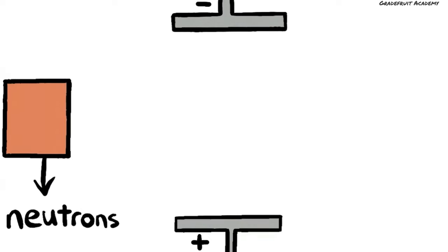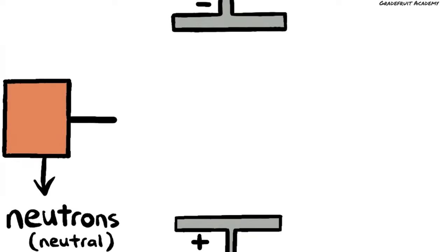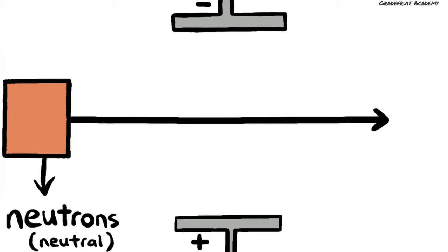For neutrons, since they are neutral, meaning they are neither positively nor negatively charged, they will not be attracted to or repelled by both the plates. Hence, the beam of neutrons will not be affected by the electric field and will just travel in a straight line.